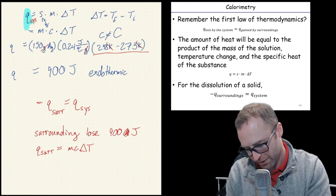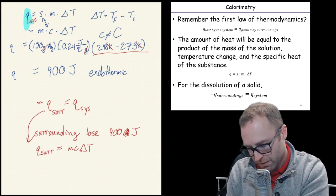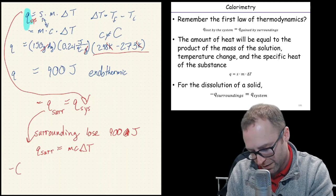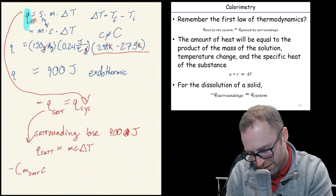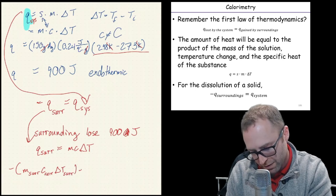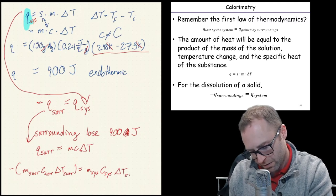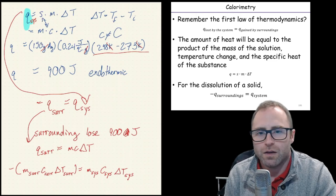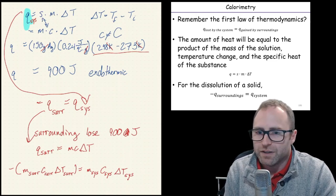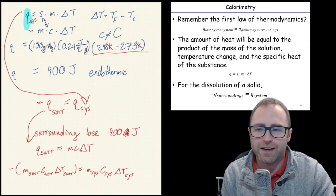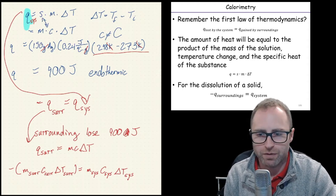You can end up with a combined equation: negative (mass of surroundings × specific heat of surroundings × ΔT of surroundings) = mass of system × specific heat of system × ΔT of system. That's completely valid — we're just plugging and chugging and rearranging mathematical equations. That's one way calorimetry becomes a spicier question.